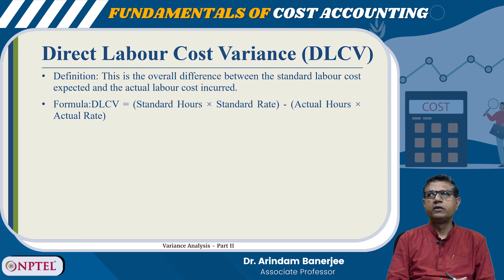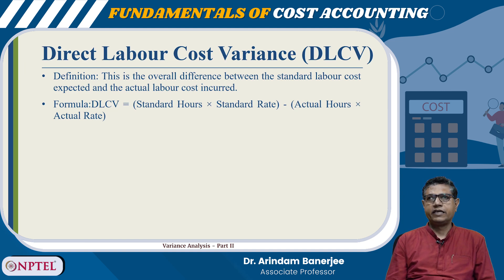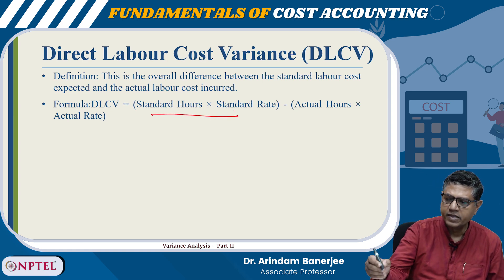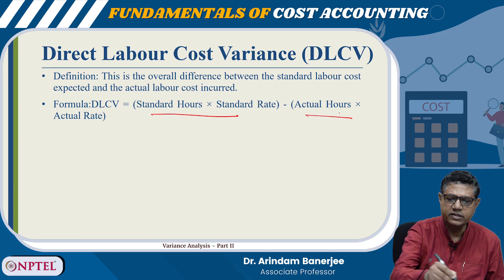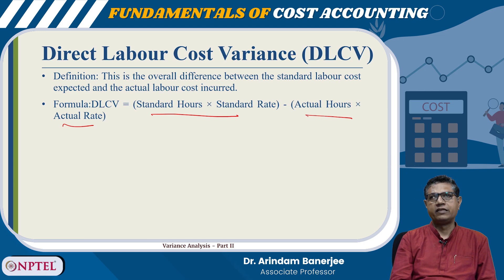Direct labor cost variance is the overall difference between the standard labor cost expected and the actual labor cost incurred. The formula is: Standard Hours × Standard Rate minus Actual Hours × Actual Rate. This gives us the total direct labor cost variance.